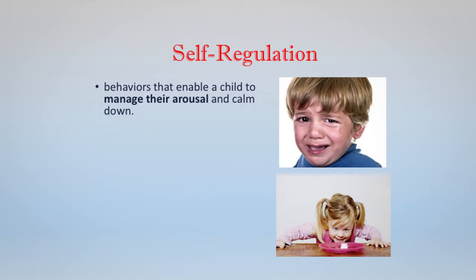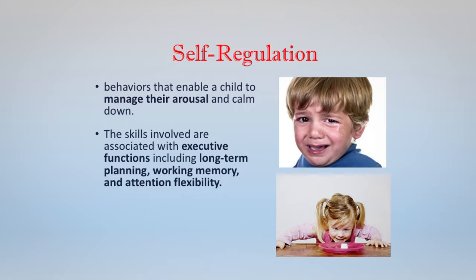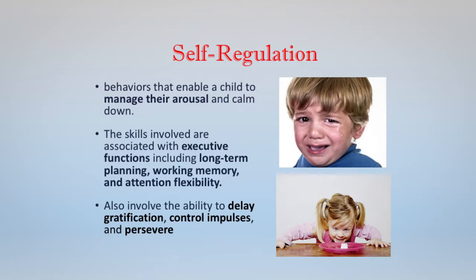The second component is self-regulation. These are behaviors that allow a child to manage their arousal and calm down. They are skills that involve what we think of as executive functions: long-term memory, working memory, long-term planning, and attention flexibility. Rothbart argued these develop over the preschool years, and the trajectory of that development differs from child to child — in part a function of the scaffolding parents provide early in life, and in part temperamental differences within the child. They also include delay of gratification, impulse control, and perseverance.